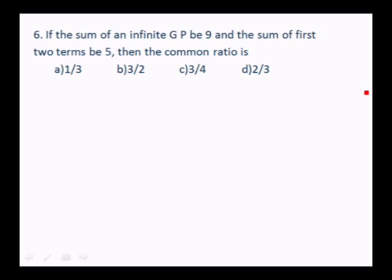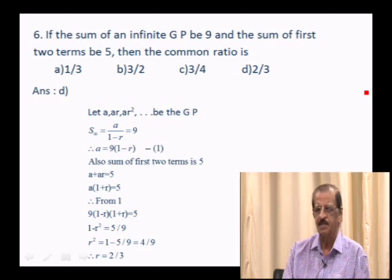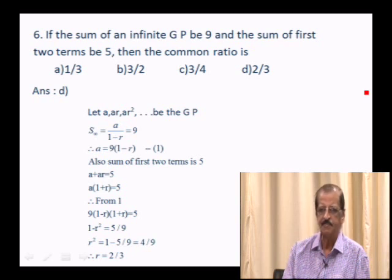GP Question 6: If the sum of an infinite GP is 9 and the sum of the first two terms is 5, find the common ratio. S∞ = a/(1−r) = 9 gives a = 9(1−r). Sum of first two terms: a(1+r) = 5. Substituting: 9(1−r)(1+r) = 5, so 1−r² = 5/9, r² = 4/9, r = 2/3. Answer: option D.